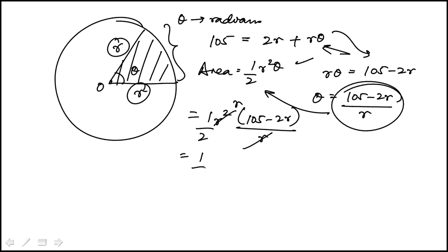That r knocks out. I'm going to distribute the r. You'll see why. So that's my area function. If you notice, this is a quadratic, and this is a downward opening parabola because you have a negative coefficient here.